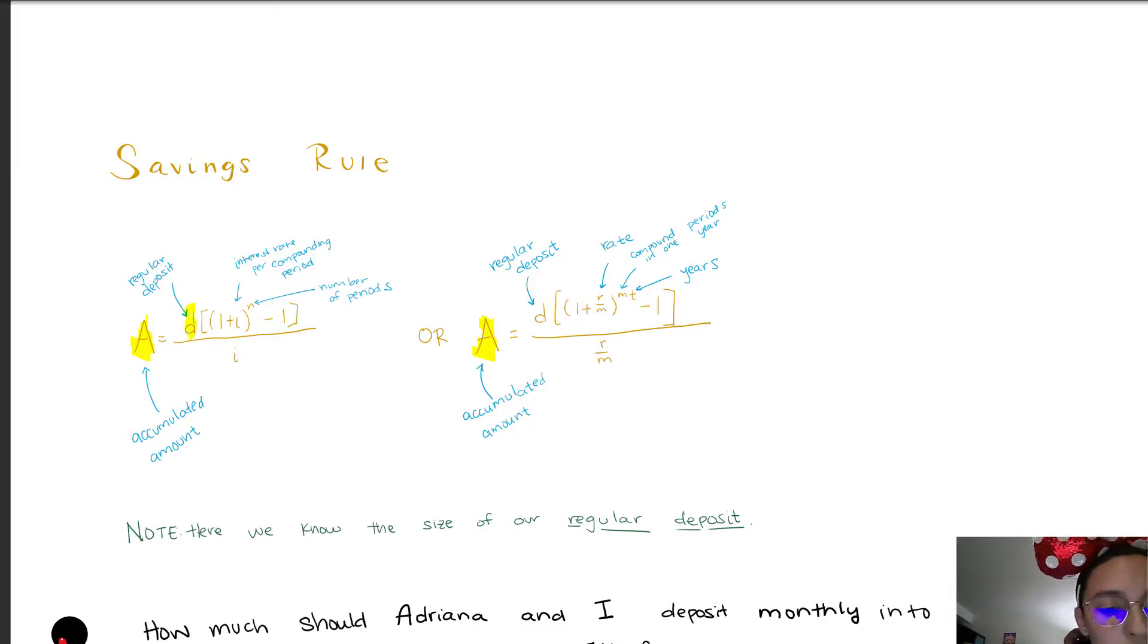D is a new variable that we're introducing and this is our regular deposit, so either every month, every day, every year. After that we have our interest rate. Now we've talked about it in different videos, you can think of it as i, which is the rate per compounding period, or you can expand it and have it be the rate divided by the compounding periods in one year.